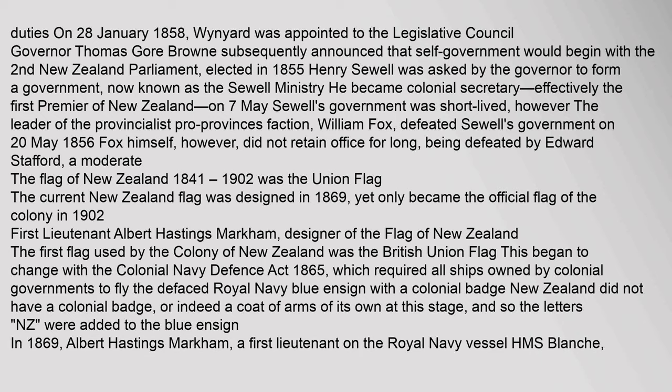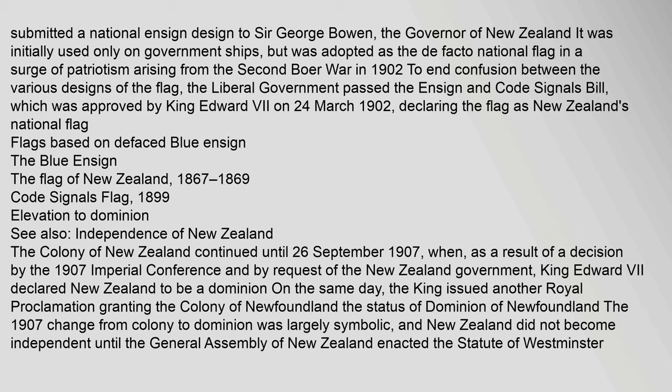Albert Hastings Markham, a first lieutenant on the Royal Navy vessel HMS Blanche, submitted a national ensign design to Sir George Bowen, the Governor of New Zealand. It was initially used only on government ships, but was adopted as the de facto national flag in a surge of patriotism arising from the Second Boer War in 1902, to end confusion between the various designs of the flag. The Liberal government passed the Ensign and Code Signals Bill, which was approved by King Edward VII on 24 March 1902, declaring the flag as New Zealand's national flag.